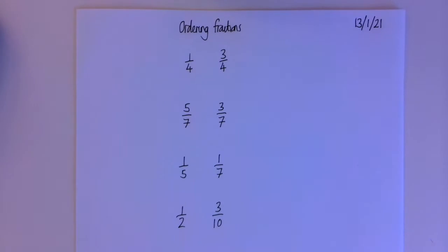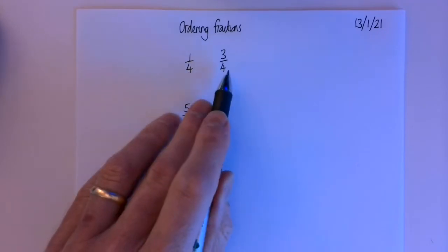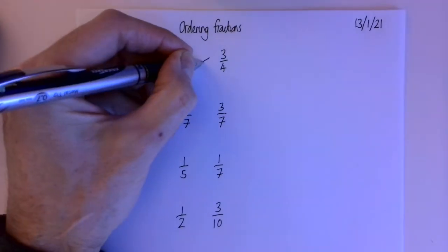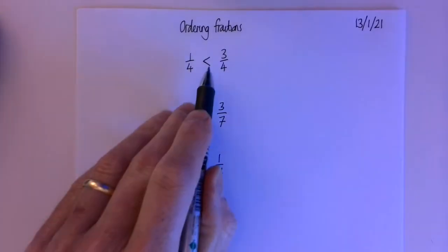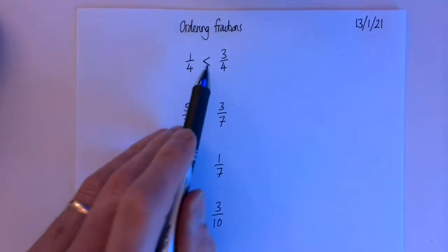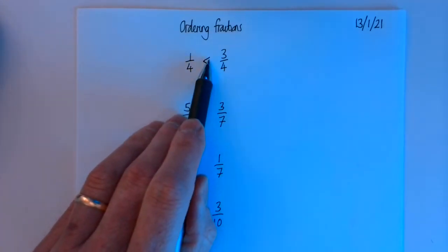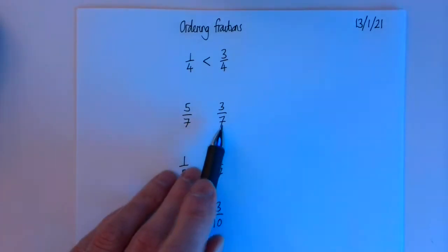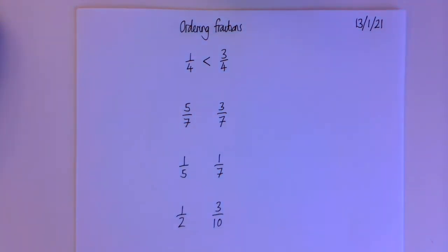Let's start with some hopefully easy examples. If I asked you which was bigger — one quarter or three quarters — I'm hoping you'd say it's obvious: when the denominators are the same, when we're dealing with the same fraction, it's easy. Are you happy with me using that symbol in between the two? The wide end points to the larger of the two things. So with sevenths: five sevenths is going to be bigger than three sevenths, so I would use the symbol that way around.